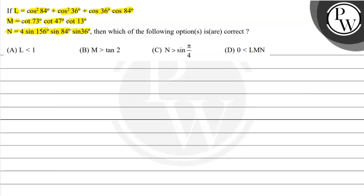There are multiple choice questions, so multiple options can be correct. The first option is L is lesser than 1. Second option is M is greater than 2. The third option is N is greater than sine of pi upon 4, and the fourth option is L times M times N is greater than 0.